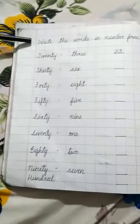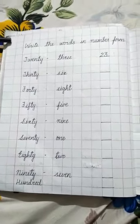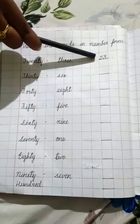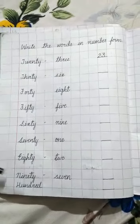Now write the words in number form. Twenty-three. Write the number 23. Now complete the rest for homework.